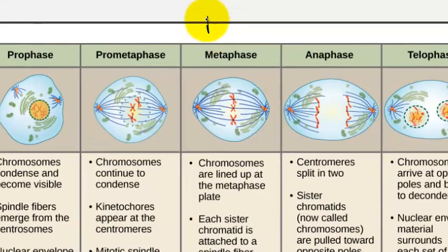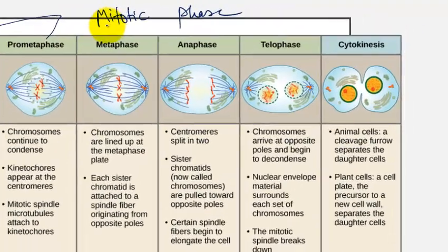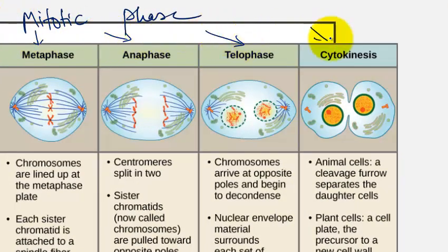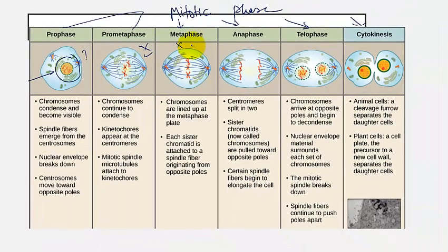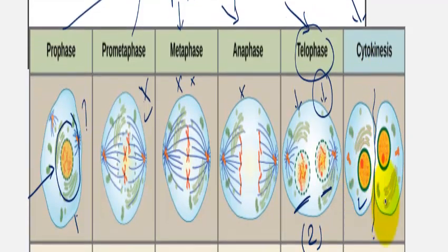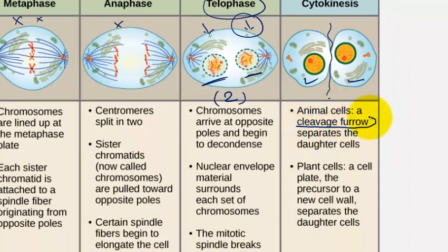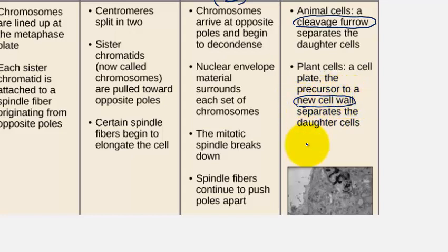The mitotic phase can be divided into prophase, prometaphase, metaphase, anaphase, telophase, and cytokinesis. During nuclear changes, the nucleolus dissolves and then in telophase two new nuclear membranes appear. In cytokinesis, each cell gets its own nucleus. In animal cells, division is identified by the cleavage furrow, while in plant cells a new cell wall forms to separate the two cells.